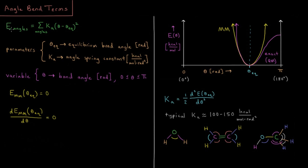The energy of all the angles is the sum over all angles of each of their individual angle energies. This looks very similar to the bond energy result: we get an angle spring constant parameter times the quantity (theta minus the equilibrium bond angle), where theta is frequently a value in radians, squared — and then summed over all the angles.